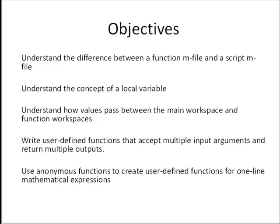Our objectives in this video are to understand the difference between a function mFile and a script mFile. We want to understand the concept of a local variable and why this is a useful way of doing things. We want to understand how values pass between the main workspace and function workspaces. We want to learn how to write user-defined functions that accept multiple input arguments and return multiple outputs, and also to use anonymous functions to create user-defined functions for one-line mathematical expressions.